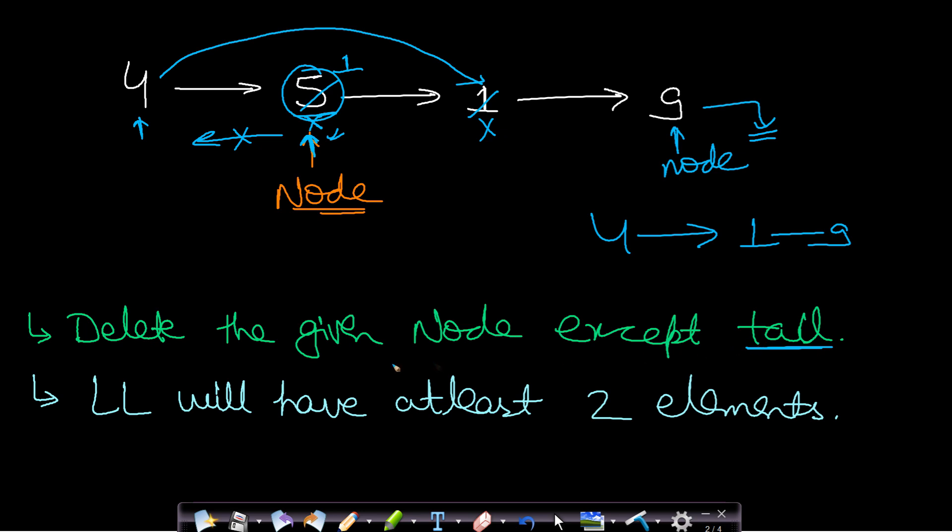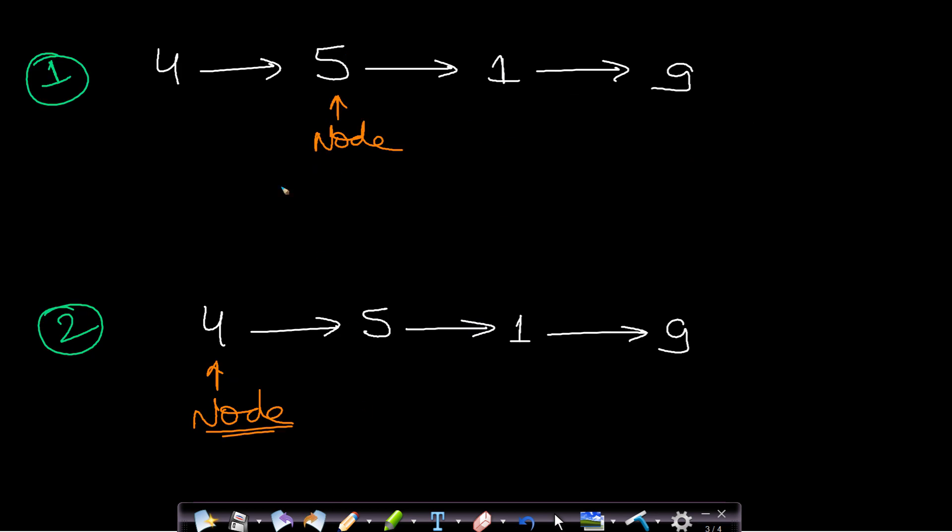Therefore, the question is saying that delete the given node except the tail node. Now the linked list will have at least two elements, so we are not asked to delete the tail node. So it is very logical that the linked list will have two elements because if you have only one element then head and tail will be the same.